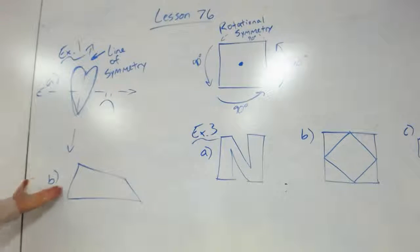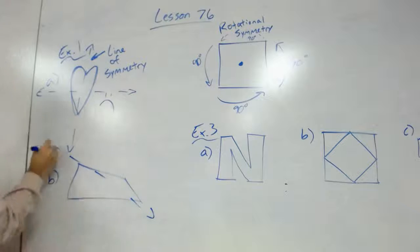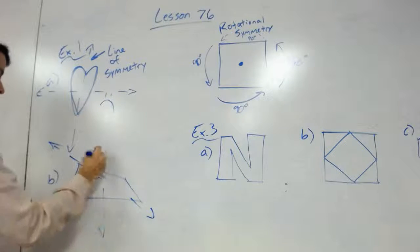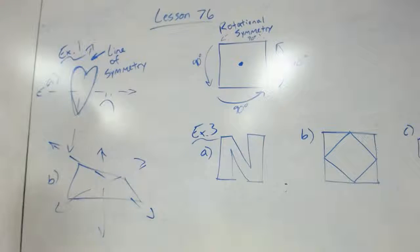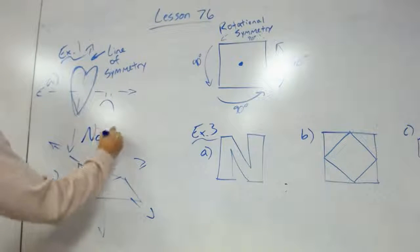Example 1B asks if this shape has any lines of symmetry. Well, if I tried to cut it any way, there's no way that it would work to where it would fold completely in half. So therefore, that has no lines of symmetry.